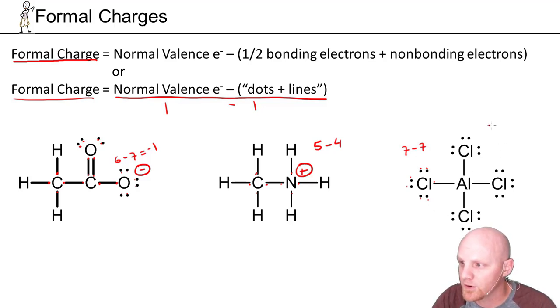And finally for the aluminum in the middle, his normal number of valence electrons is three, and he's got one, two, three, four lines and no dots. Three minus four would give him a minus one formal charge on the aluminum. Just write that symbol next to the aluminum atom there.